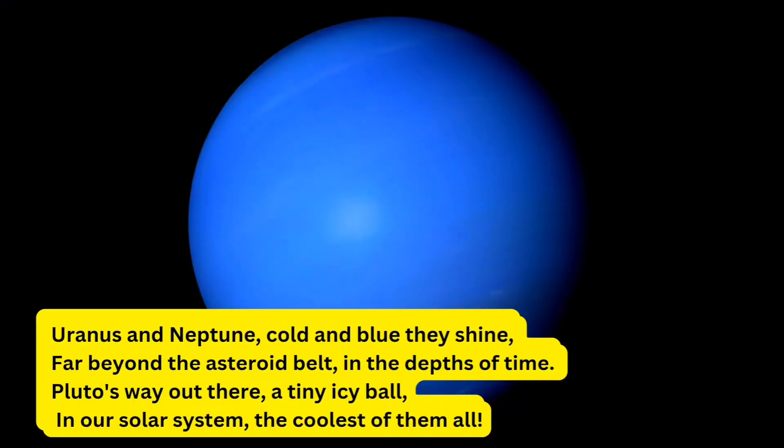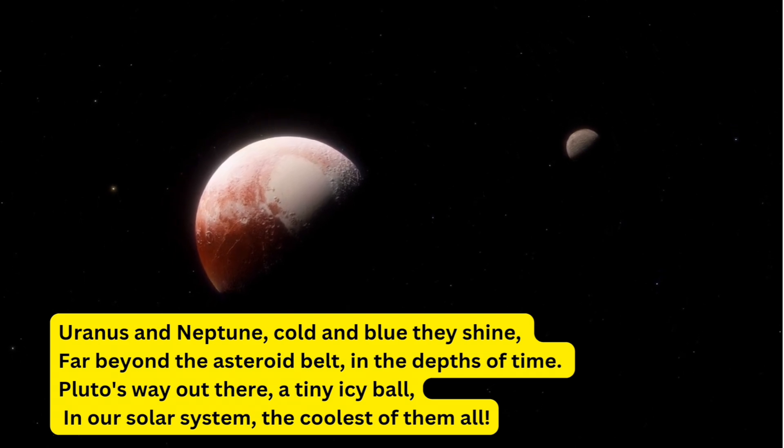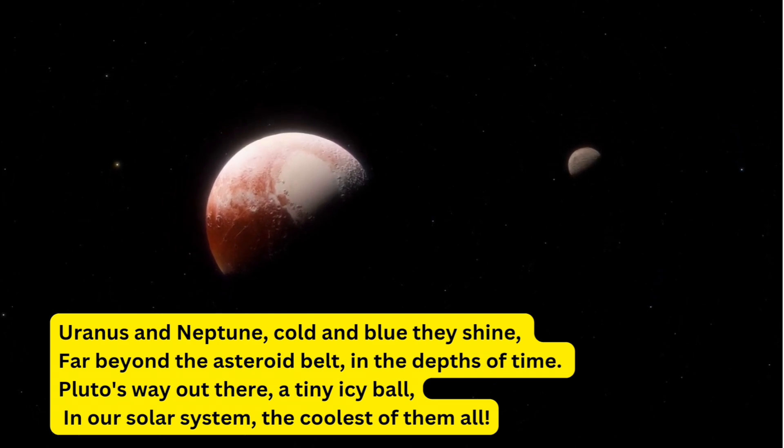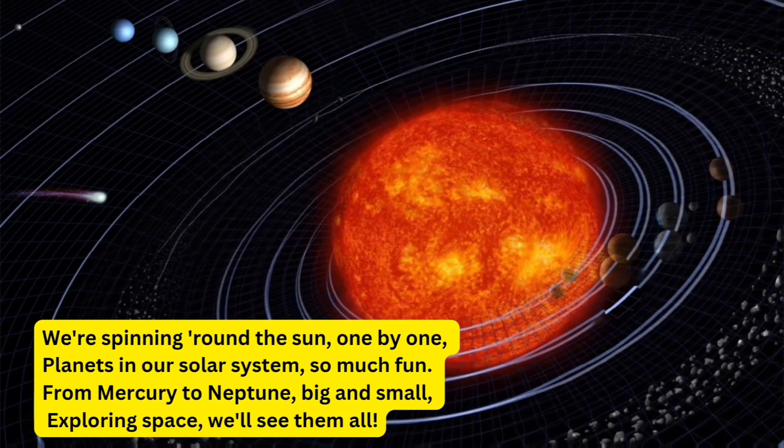Uranus and Neptune, cold and blue they shine, far beyond the asteroid belt, in the depths of time. Pluto's way out there, a tiny icy ball. In our solar system, the coolest of them all. We're spinning round the sun,